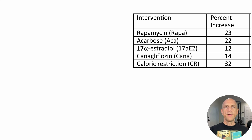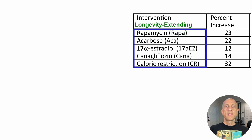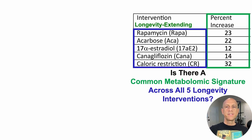Longevity-extending interventions, including rapamycin, acarbose, 17-alpha-estradiol, canagliflozin, and calorie restriction, extend lifespan in mice anywhere from 12 to 32%. Is there a common metabolomic signature across all five longevity interventions? And if so, can we use that data to potentially improve human health and longevity?